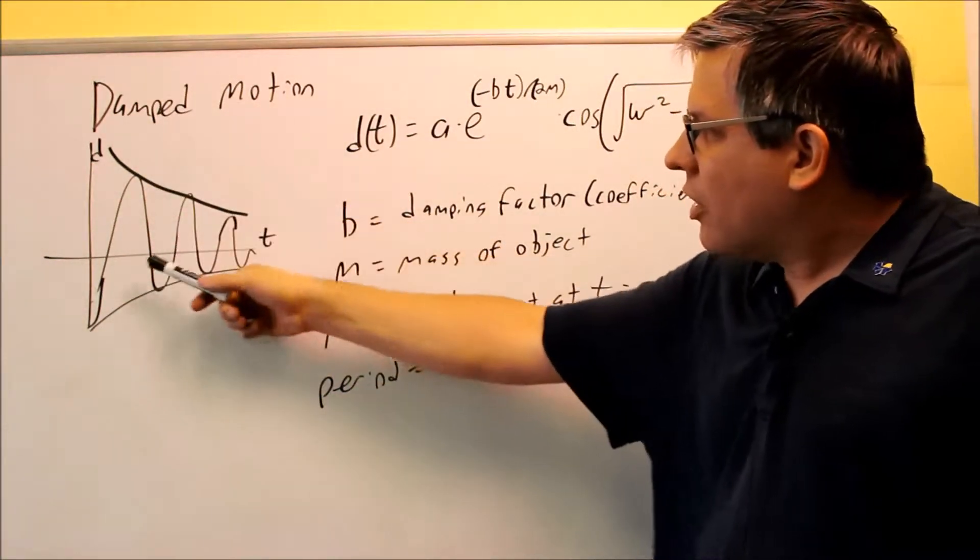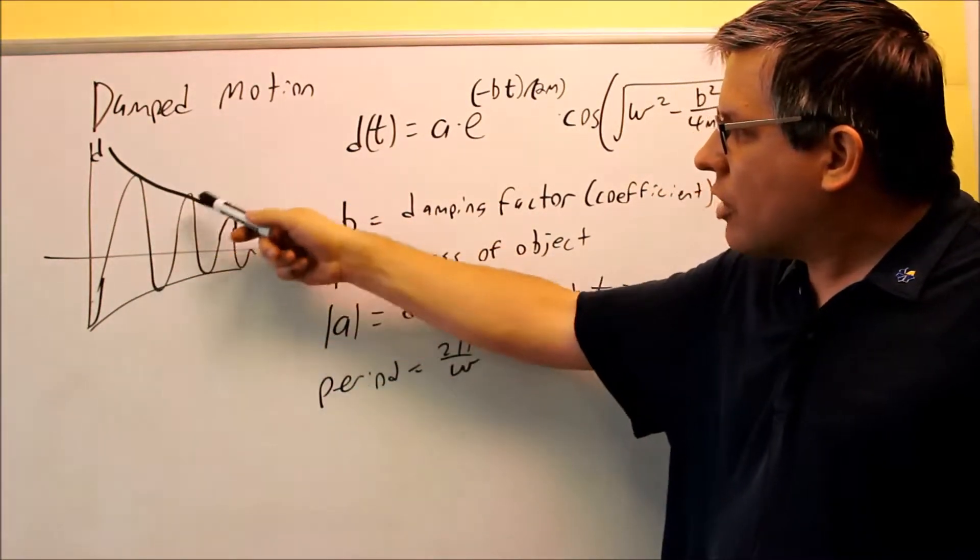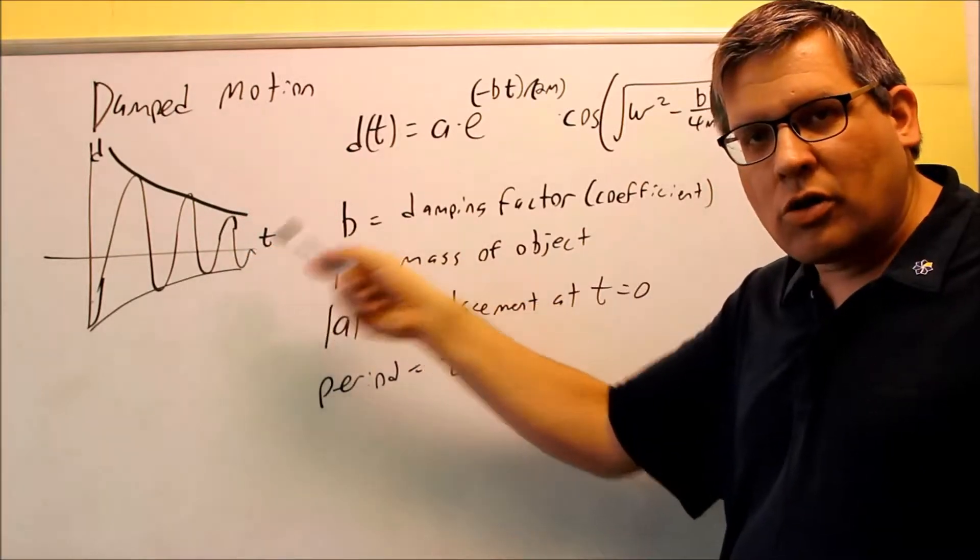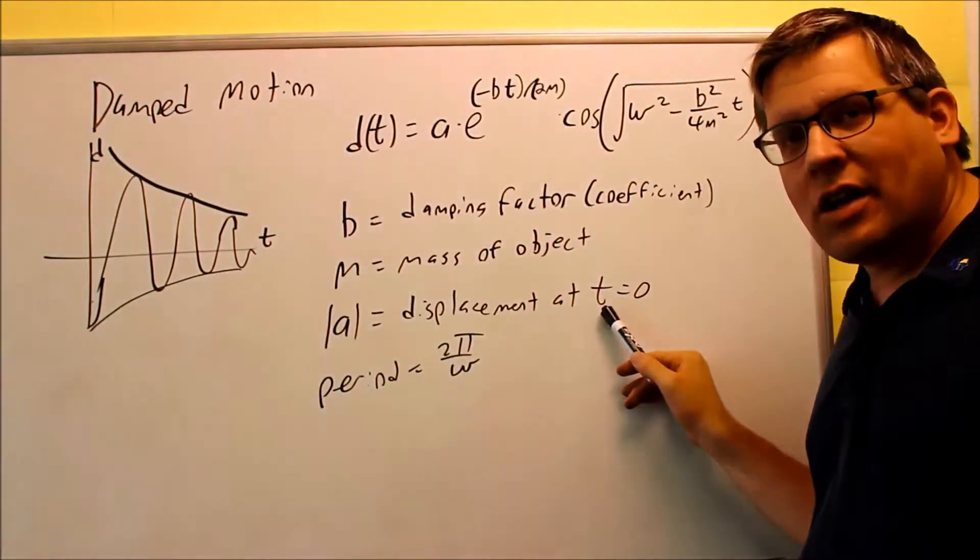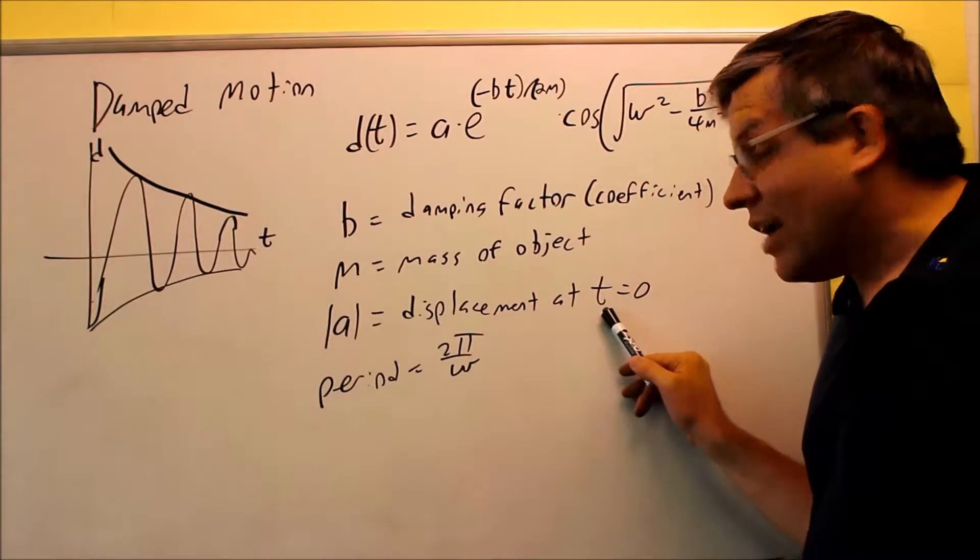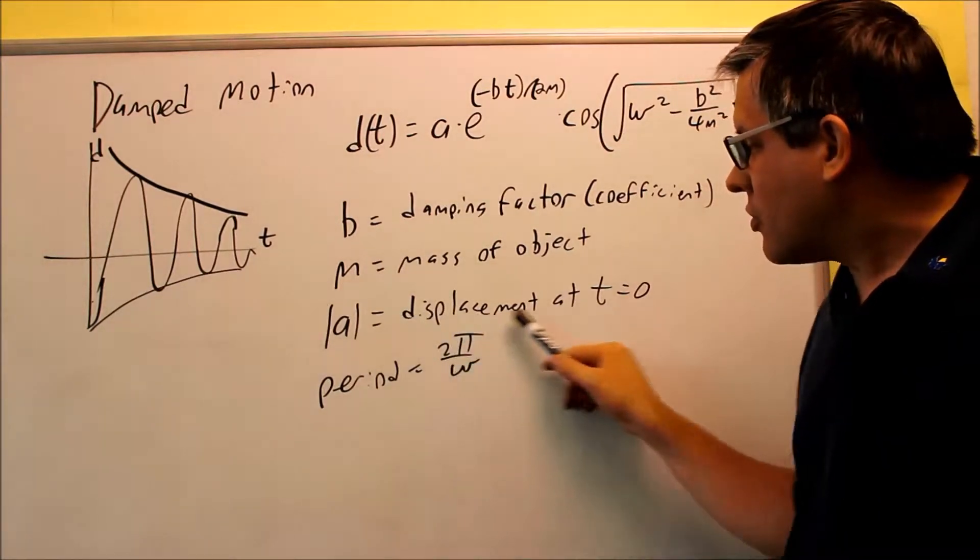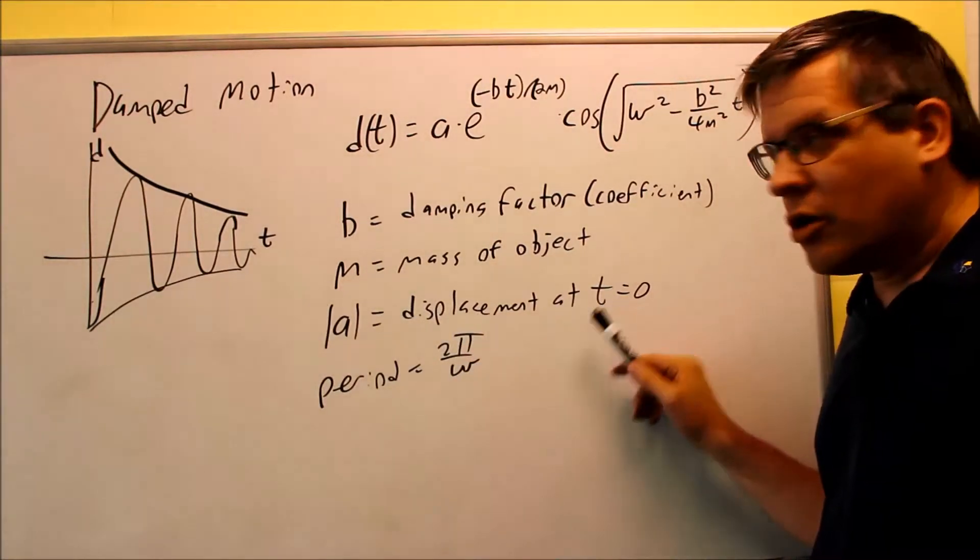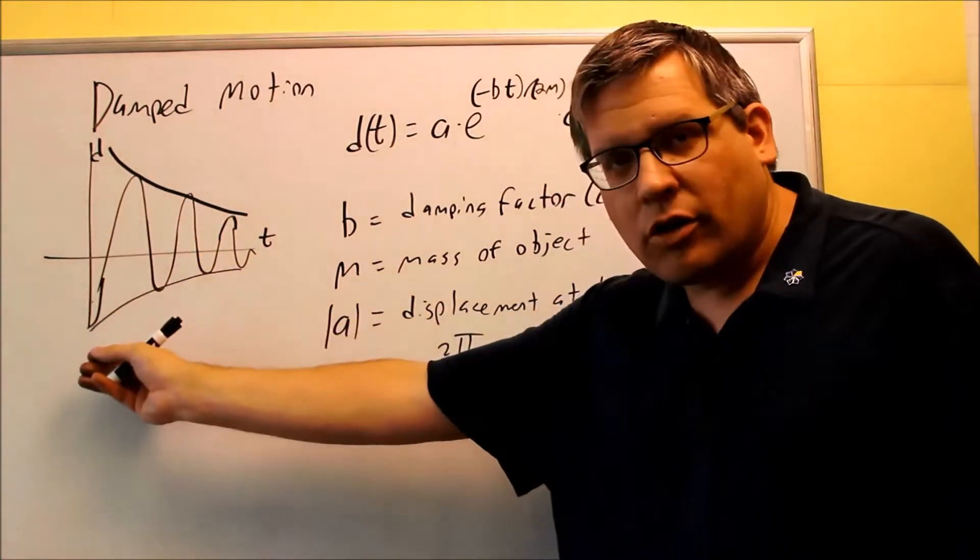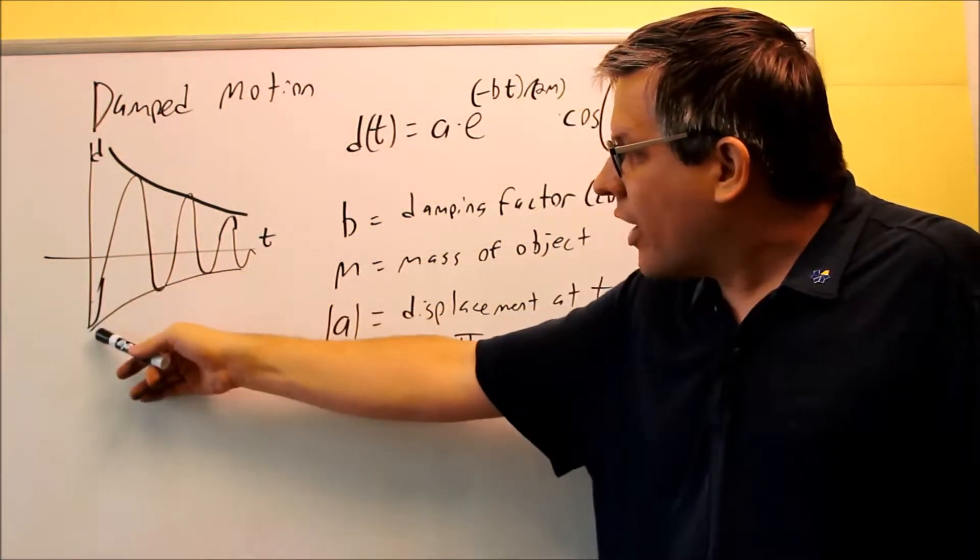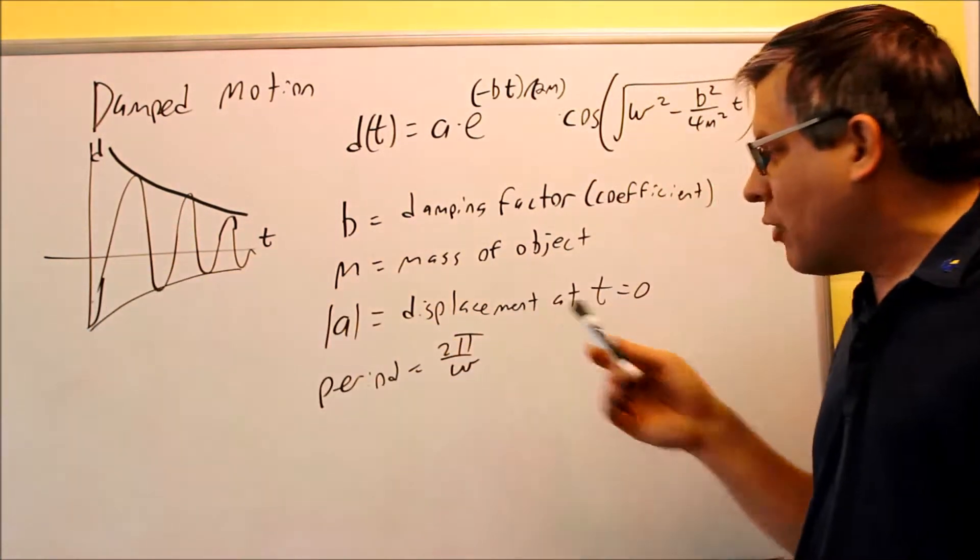It bounces up and down, but every time the amplitude gets smaller and smaller. So therefore, the A here is not necessarily the actual amplitude. The A itself is your displacement at time equals zero. So how far you pull the spring down initially, how far you are away, that's actually what the A represents here.